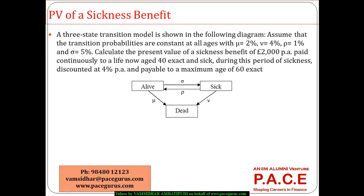Let's look at the numerical associated with the three-state transition model for computation of the sickness benefit. Assume that the transition probabilities are constant at all ages. Mu is 2 percent, meaning the probability of going from a live state to a dead state is 2 percent per year. Sickness to dead is 4 percent. Sickness to alive (healthy) is 1 percent. And alive to sickness is 5 percent.